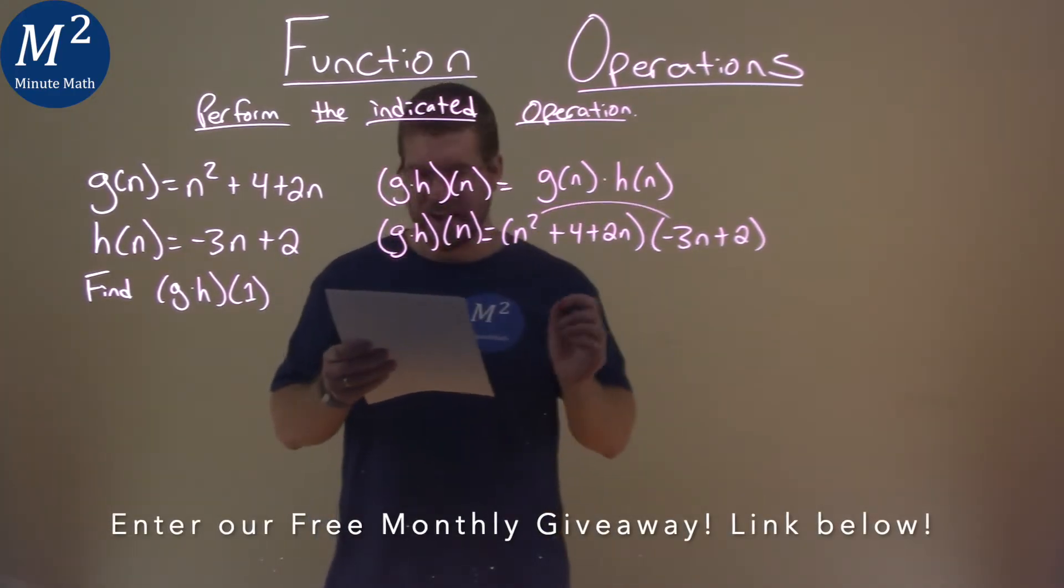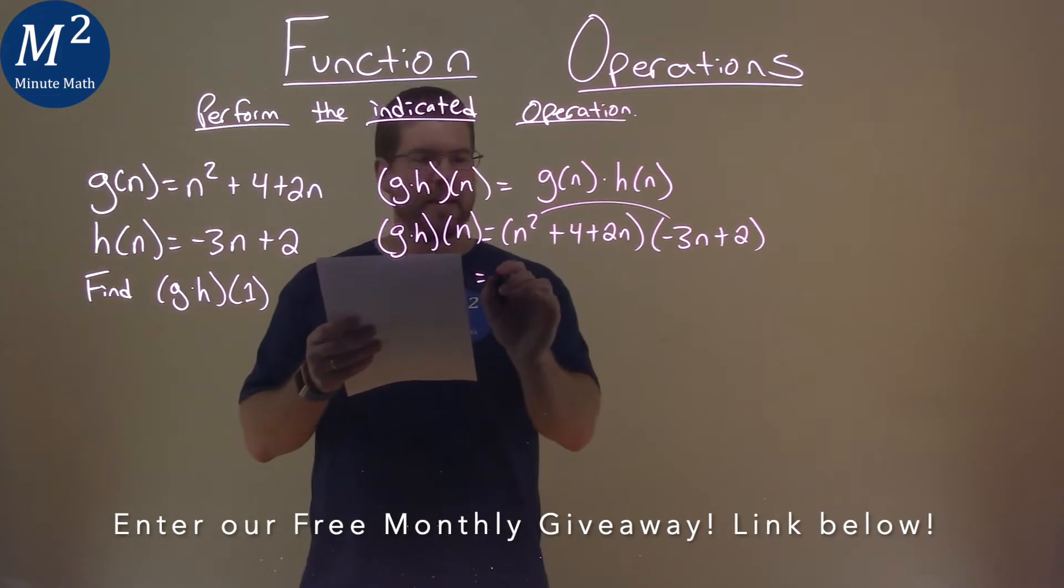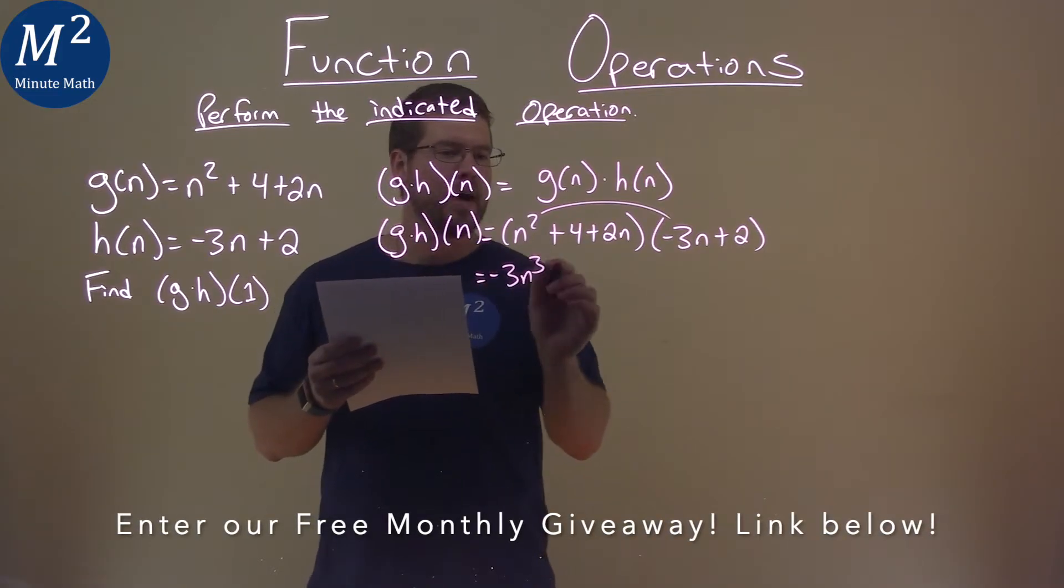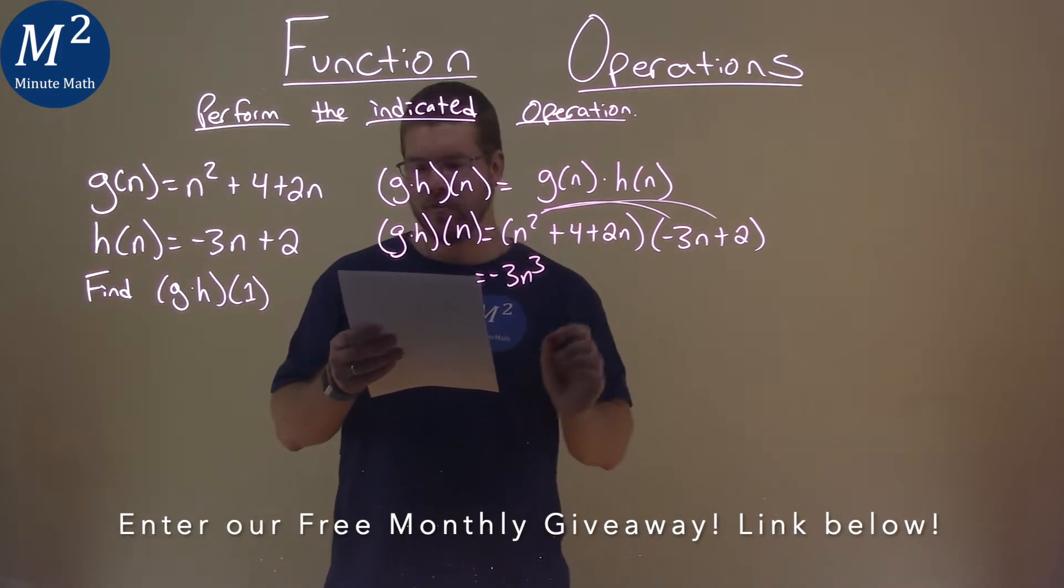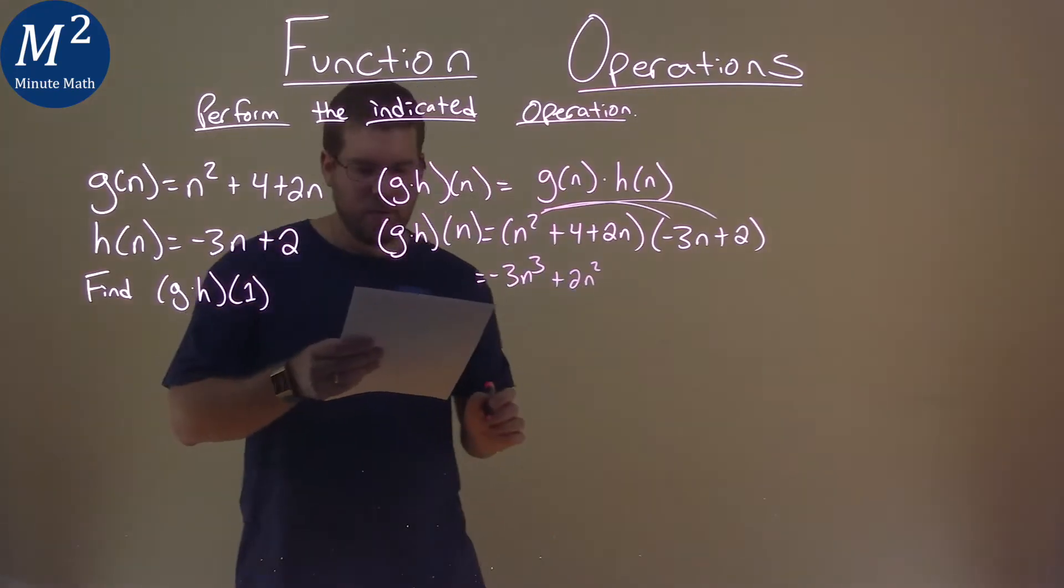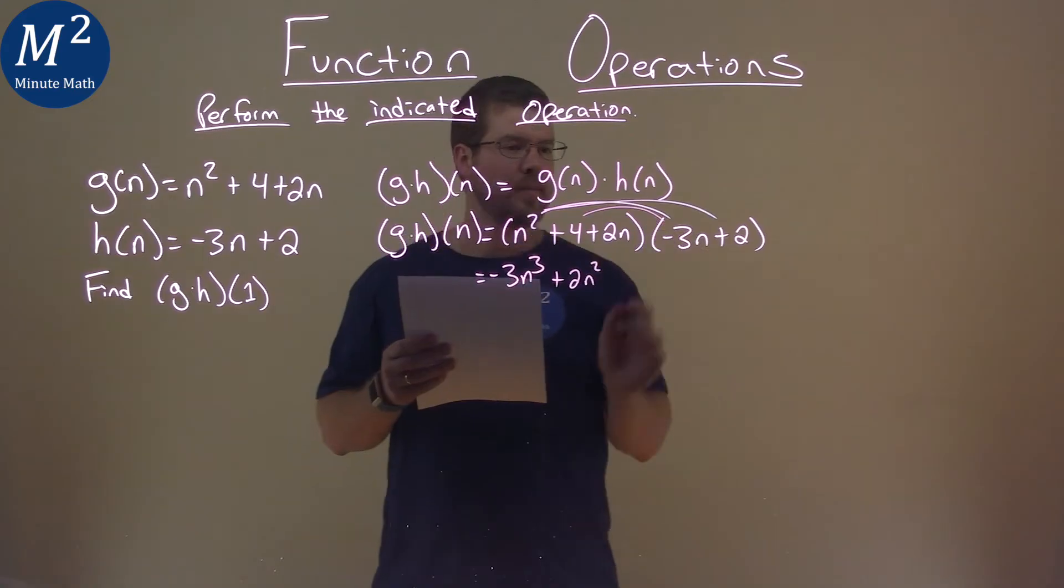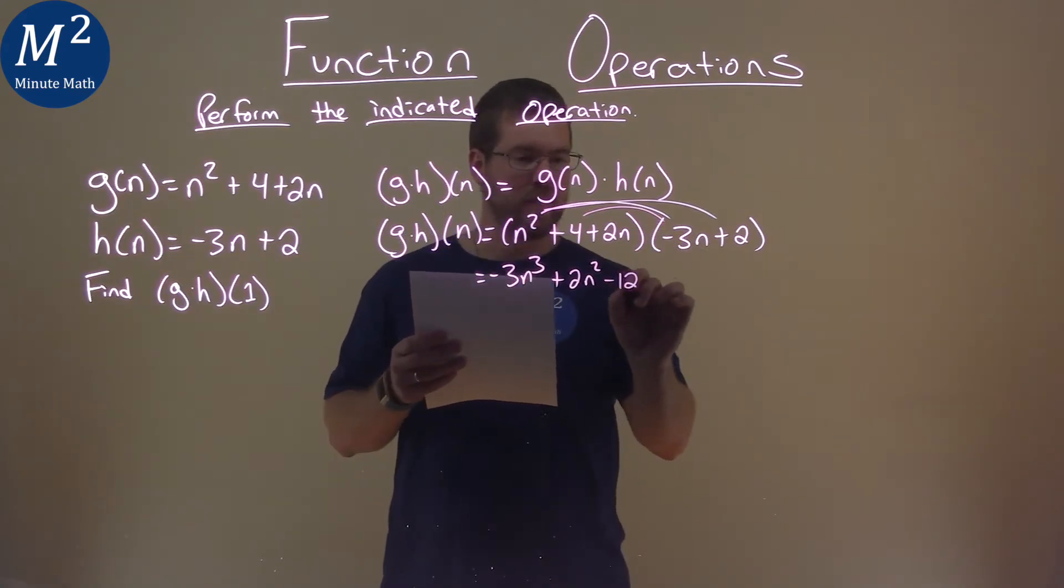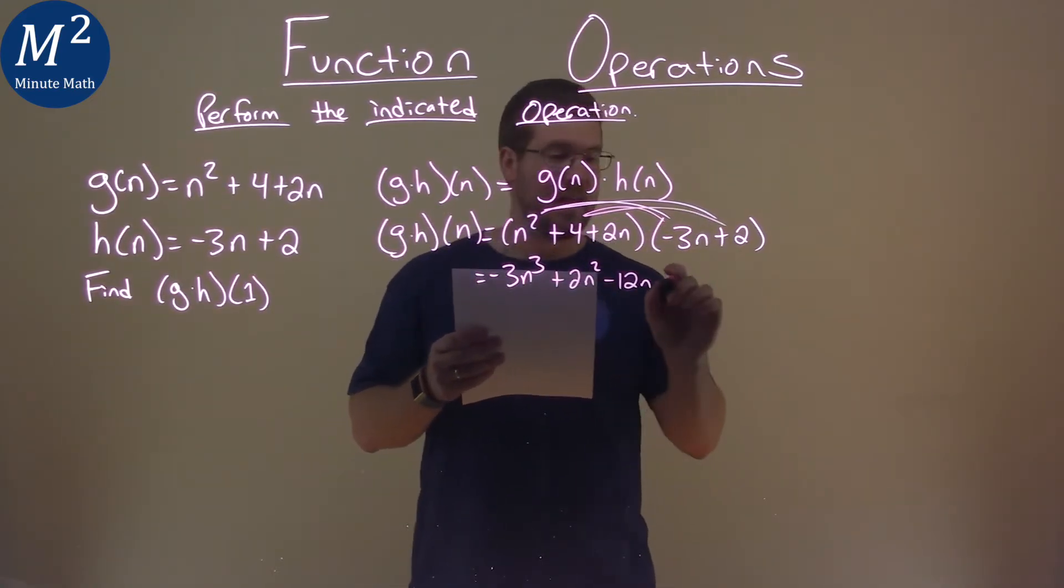n squared times negative 3n is negative 3n to the third power. n squared times 2 is plus 2n squared. We can do the same thing with the 4. 4 times negative 3n is negative 12n and 4 times 2 is 8.